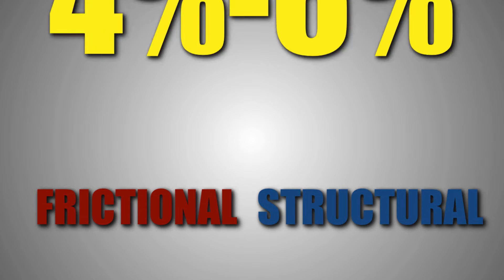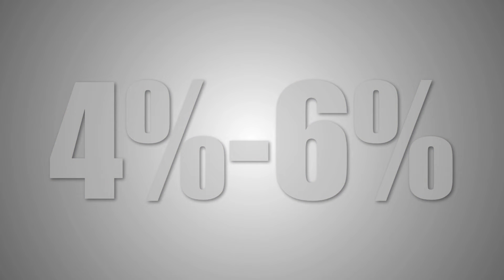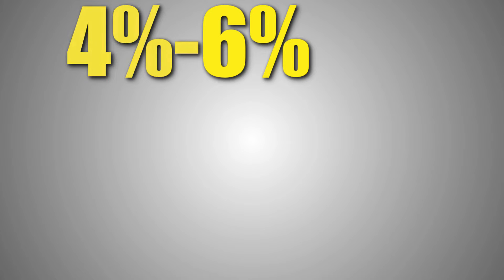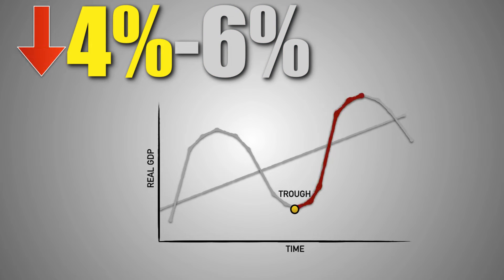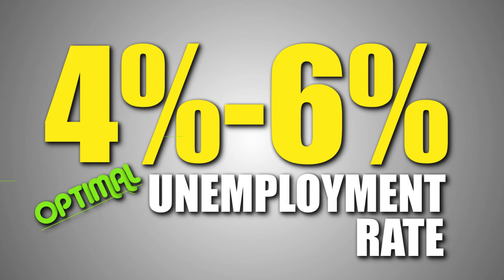Economists agree that at any given time, 4–6% of the labor force is either frictionally or structurally unemployed, and there's nothing we can do about it. How do we prevent someone from being late to work and getting fired? Or from quitting their job to apply for a new one? How do we prevent time from making skills obsolete? It's just not possible, and it's out of our control. As a result, the 4–6% of frictional and structural unemployment that take place at any given time in our economy is considered our natural rate of unemployment, meaning 4–6% unemployment is considered an optimal unemployment rate. Economists use the 4–6% natural rate of unemployment to gauge where we are in the business cycle. If the unemployment rate exceeds 6%, this indicates that there is excessive cyclical unemployment occurring in our economy, and our real GDP output is most likely contracting. If our unemployment rate is below 4%, our economy is growing at a rate that is not sustainable, which could lead to excessive inflation and, eventually, economic contraction. As a result, 4–6% unemployment is the target we aim for when it comes to our unemployment rate.